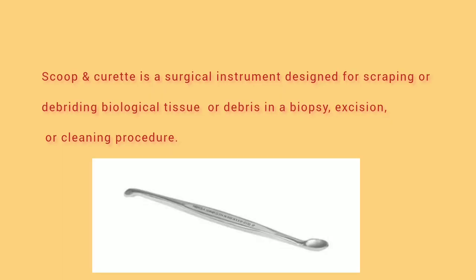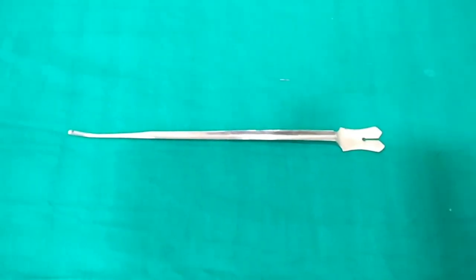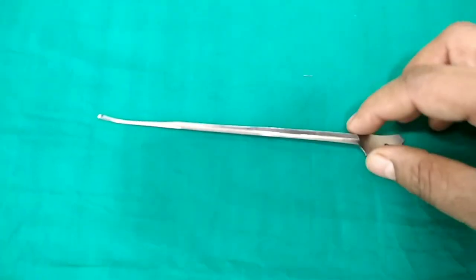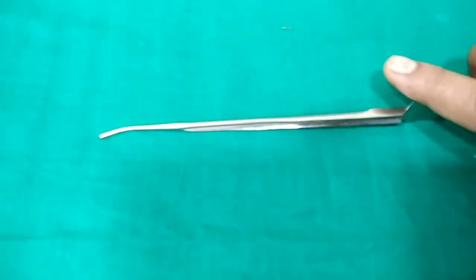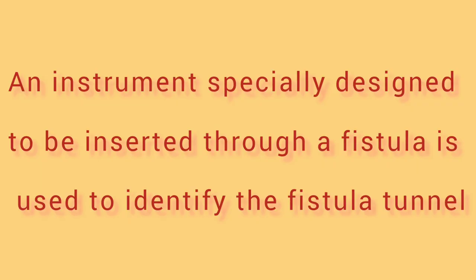This is a scoop and curette. It is used to debride or curette a wound or track. One end is for scooping purposes and the other end is for curetting. It can be used in D&C procedures, and also in fistula tracks for scooping or curetting purposes.